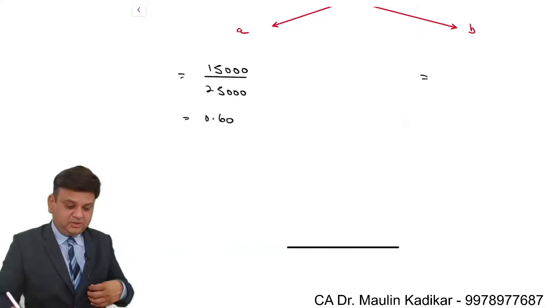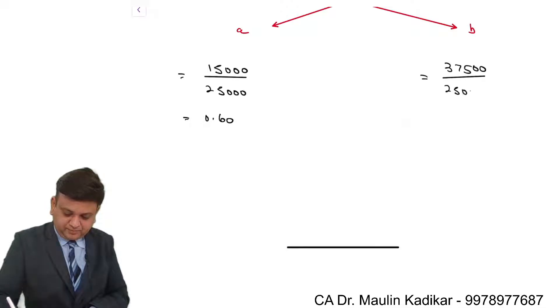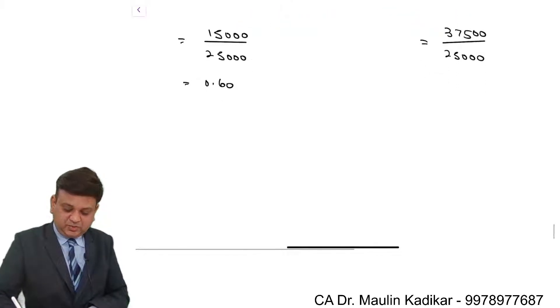And in the B question, it is 37,500 shares against 25,000 shares. So, exchange ratio is 1.50.